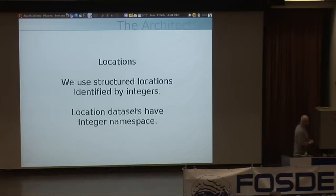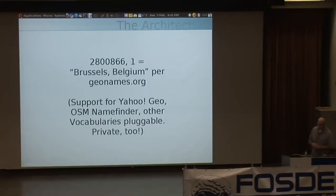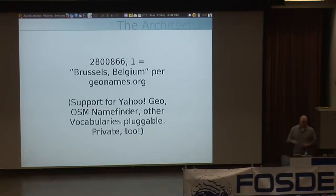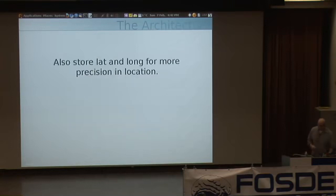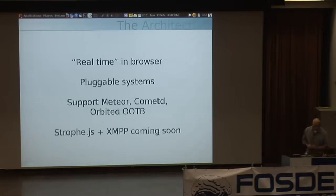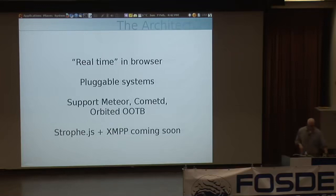Another interesting thing about our architecture is our location support. We use structured locations identified by integers, namespaced using another integer. For example, Brussels, Belgium is stored as two integers — a long number and one saying it's a GeoNames ID. We support other databases of locations like Yahoo Geo and OSM NameFinder (WOE IDs). It's pluggable, so we can have other vocabularies and even private systems. We also store lats and longs if needed. We support pluggable systems for real-time in the browser — we support a lot of the comet-based systems, and I'm really interested in using more XMPP for that.